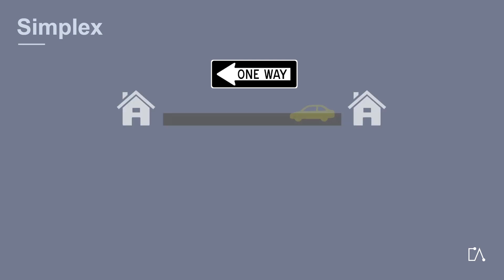Simplex means that data can only be transmitted in one direction. No response is possible. We can imagine this like a one-way street: cars can only go in one direction and there is no oncoming traffic.